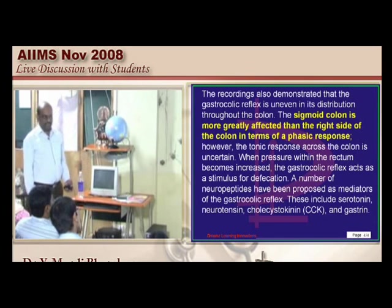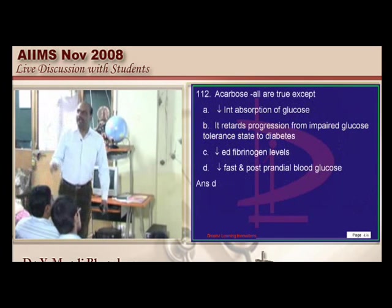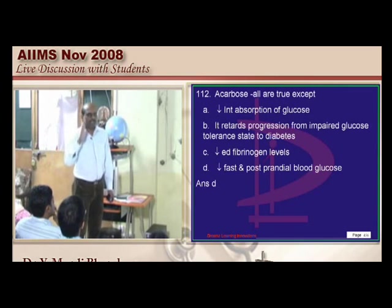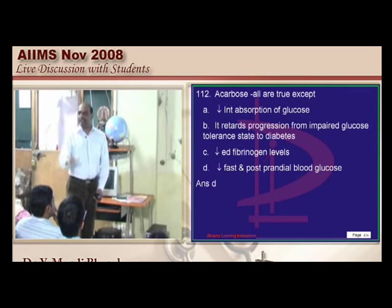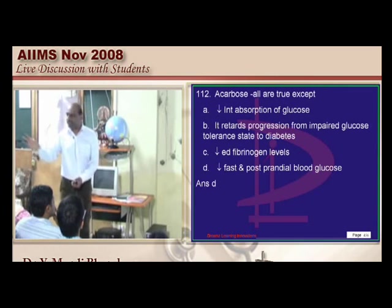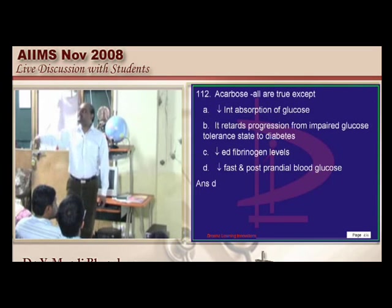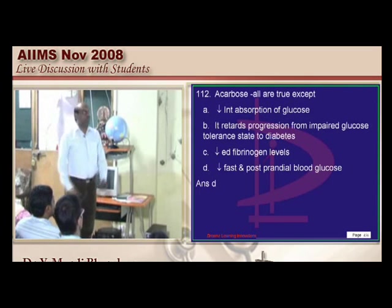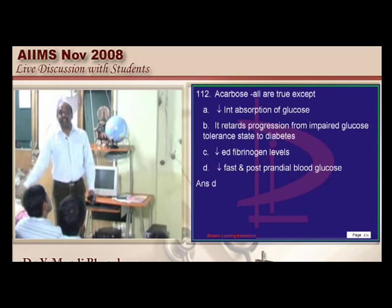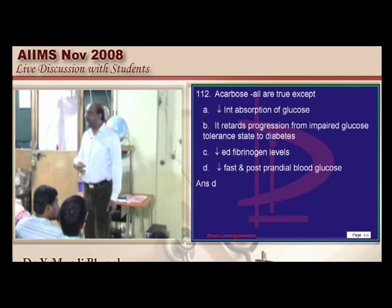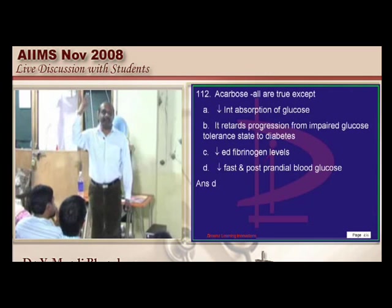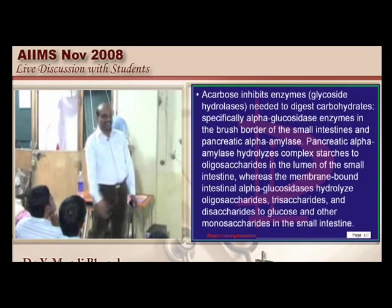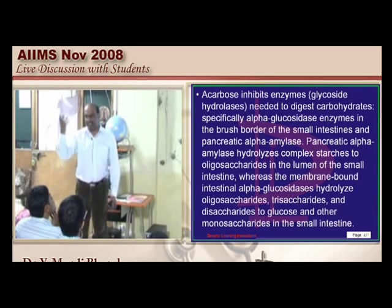Let us talk about acarbose. One monogram of research says that those using acarbose have decreased fibrinogen levels. So it not only helps with your sugar, it also helps prevent stroke and pro-clotting tendency.